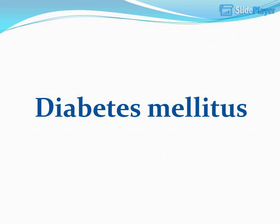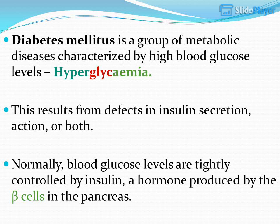Diabetes mellitus is a group of metabolic diseases characterized by high blood glucose levels, hyperglycemia. This results from defects in insulin secretion, action, or both.